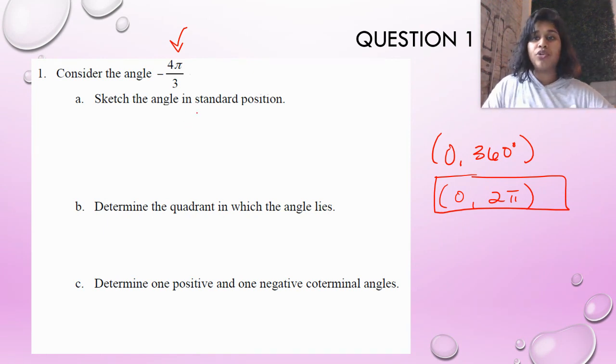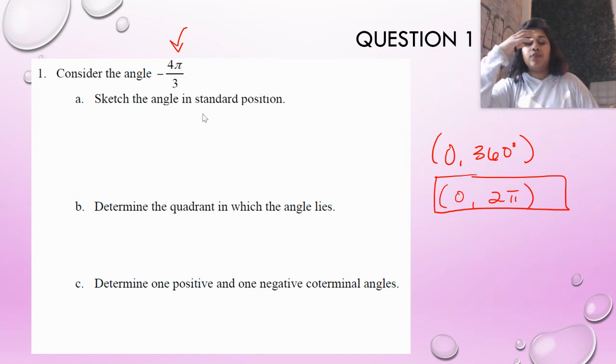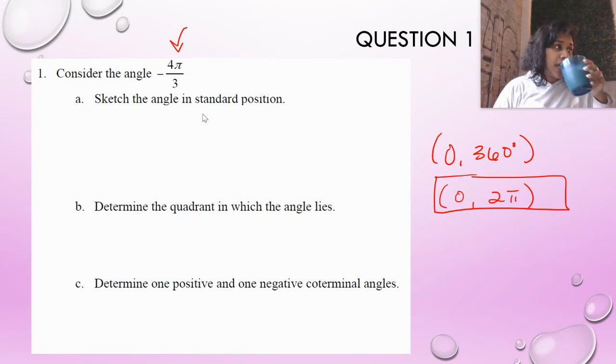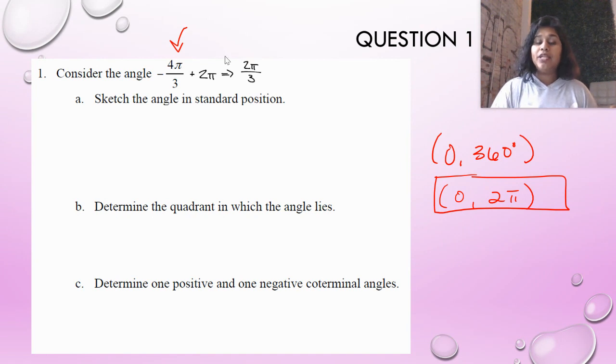So the first thing I'm going to do is add 2π. If it was way too big, if it was 6π, then I would subtract by 2π. So it just depends. If you're too small, you're going to add, if you're too big, you're going to subtract. So I'm going to add 2π, and when I add 2π, I end up with 2π over 3. Now I know some kids still struggle with fractions, so I'm going to showcase that for this question.